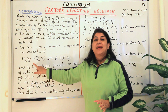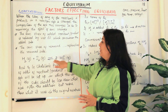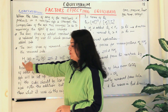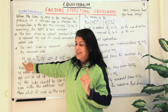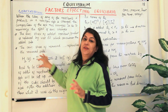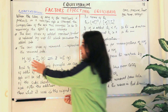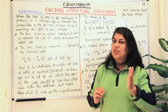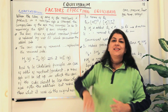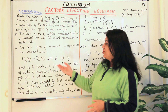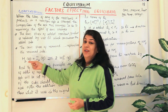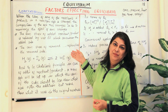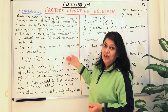Let us take the example of hydrogen and iodine reacting to give hydrogen iodide. Let us assume that we add hydrogen. Hydrogen is a reactant, so the concentration of the reactants has increased. The reaction should proceed in the direction that decreases that increased concentration. The reactant is used up in the forward direction, so the reaction will proceed in the forward direction.